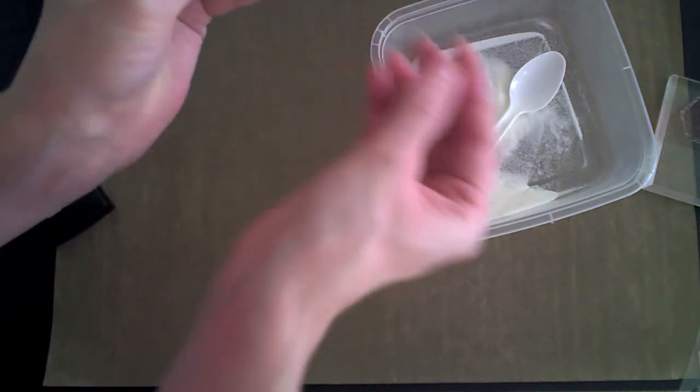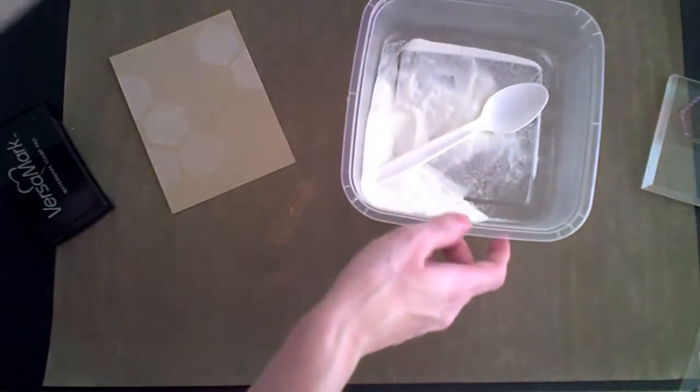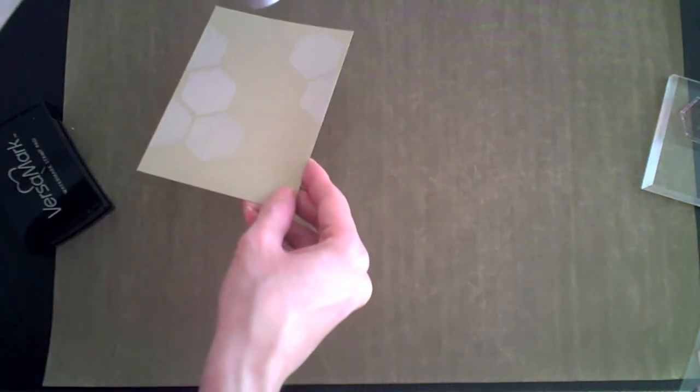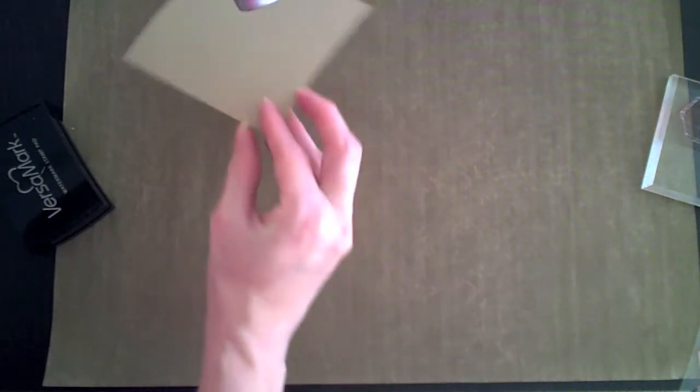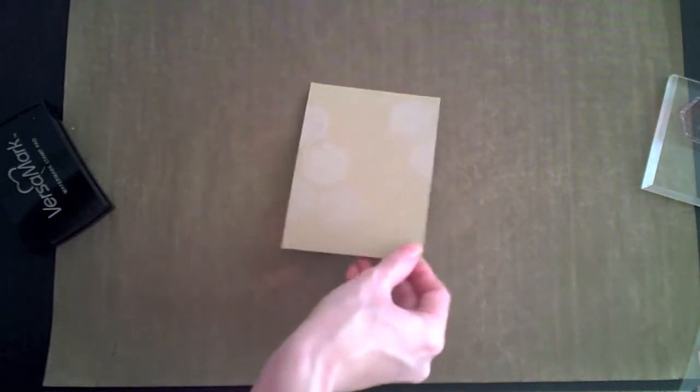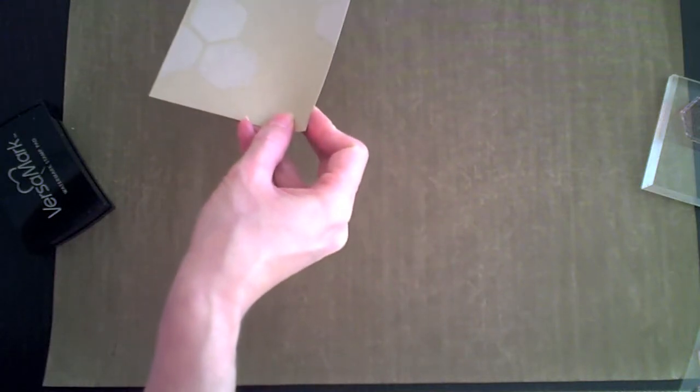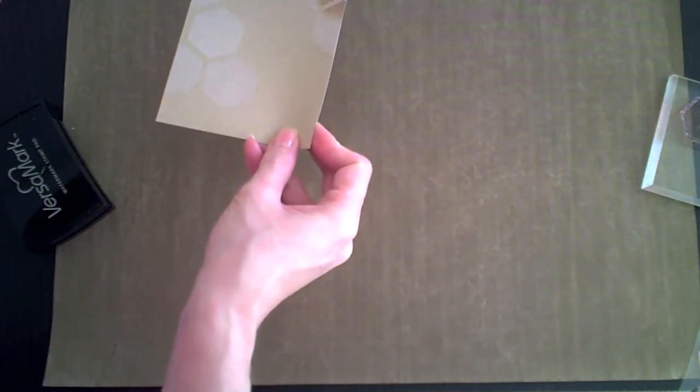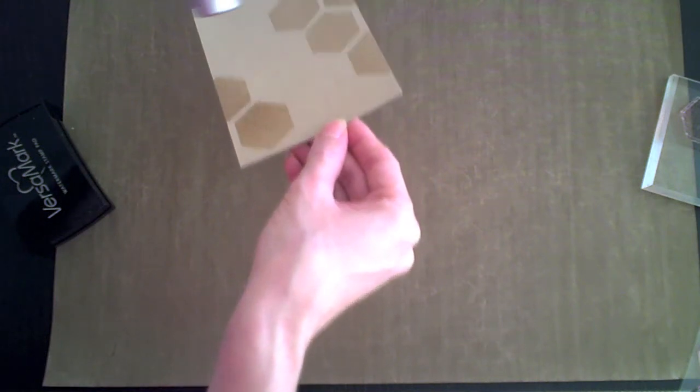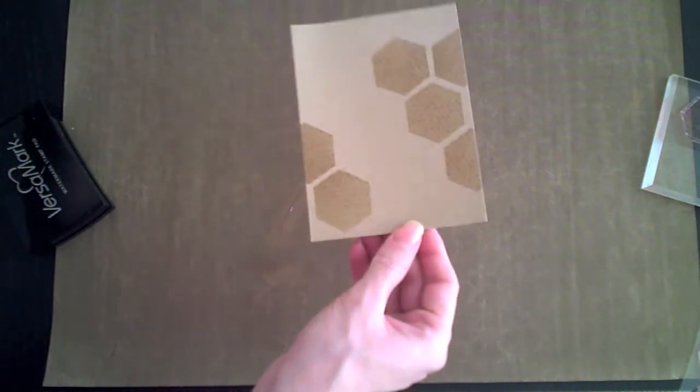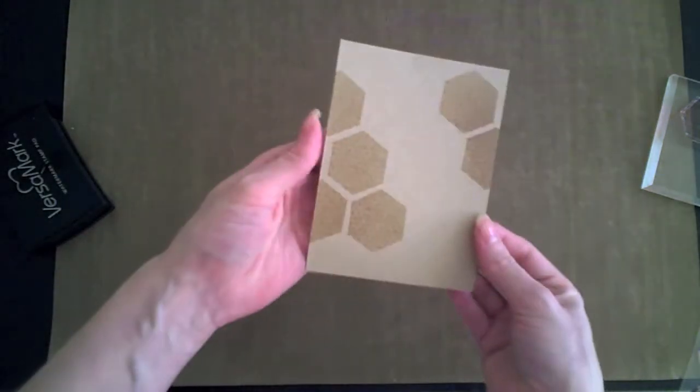And next I'm going to heat set it or actually emboss, melt the embossing powder. When I'm using my heat tool you can see that I'm trying not to point it at one place for too long. So I'm moving it around and I'm trying to hit the back side too to kind of eliminate the warping of the page, which although it will get a bit warped.